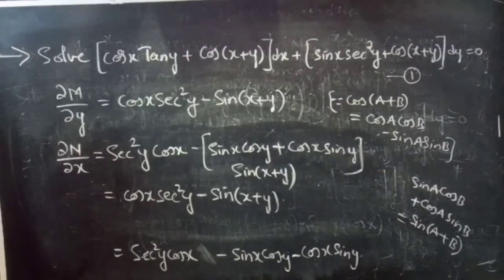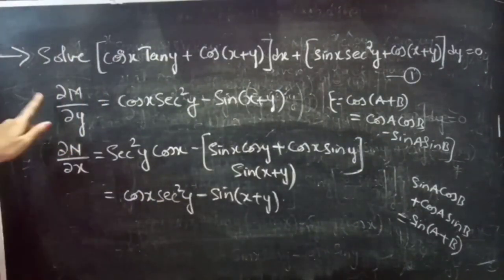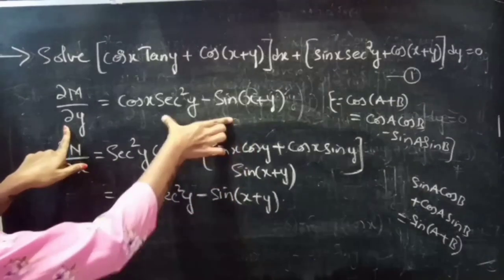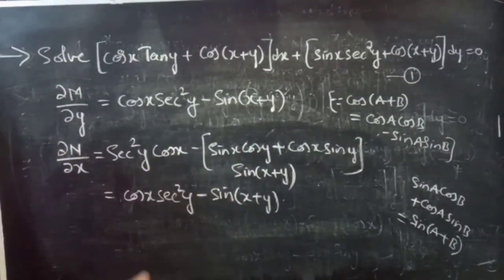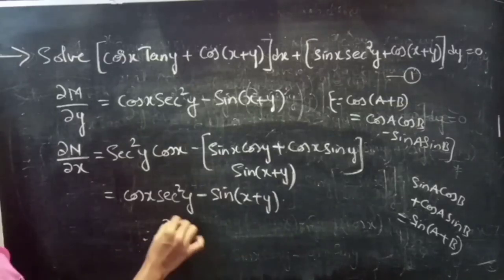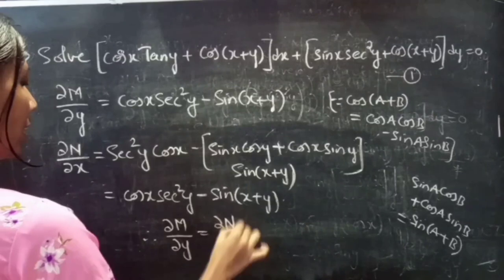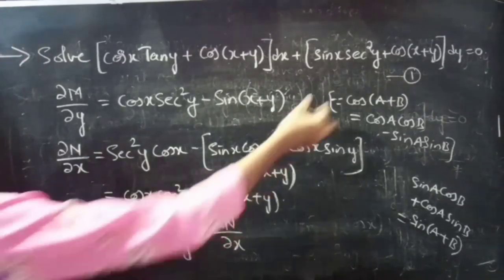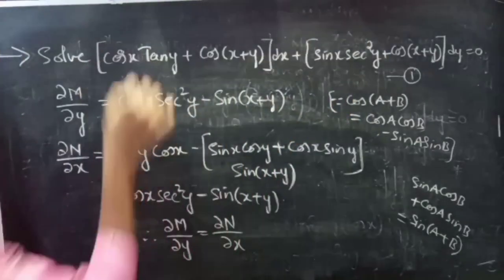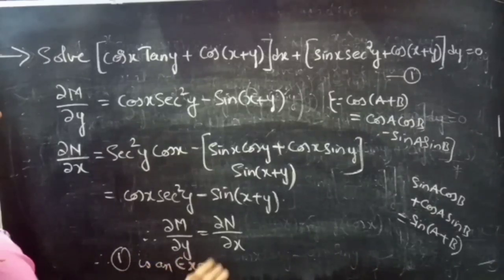So therefore, ∂M/∂y equals ∂N/∂x. From this we can say that the given equation, that is equation 1, is an exact equation.